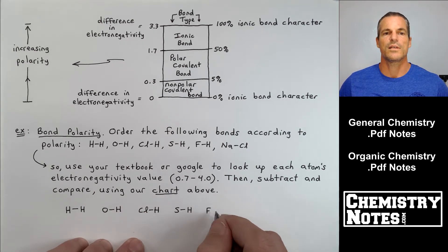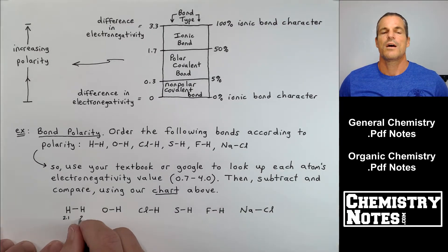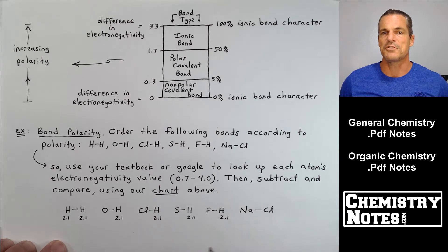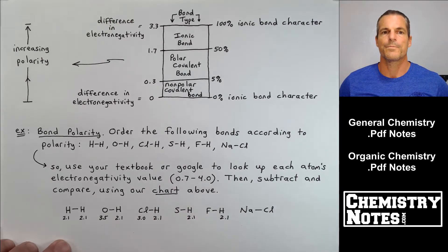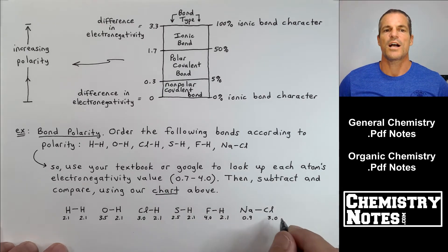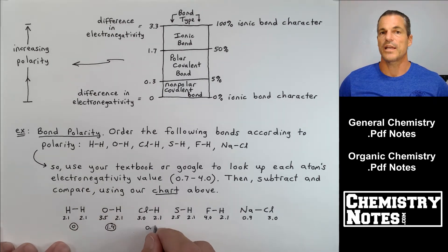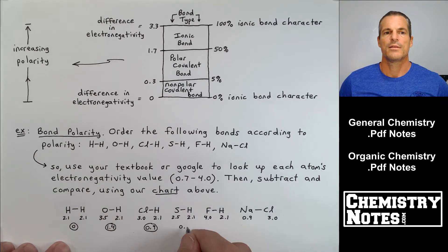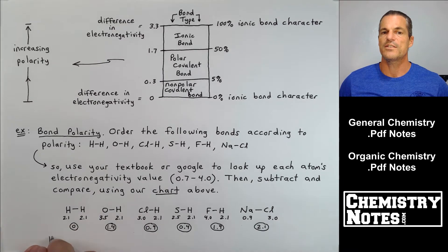Then subtract and compare using our chart above. So I'm just drawing out those bonds again and spreading them out because I'm going to write values underneath. Hydrogen and hydrogen, I didn't even really need to look hydrogen up because hydrogen minus hydrogen is going to be a 0. So H-H 0, O-H 1.4, Cl-H 0.9, S-H 0.4, F-H 1.9.